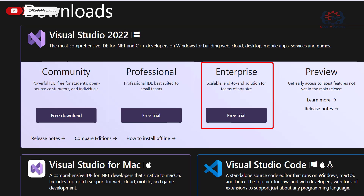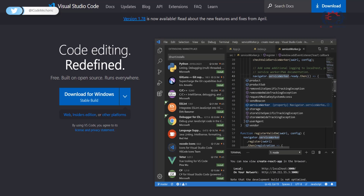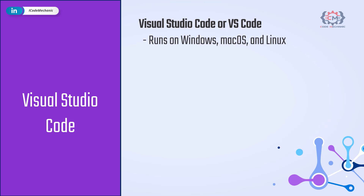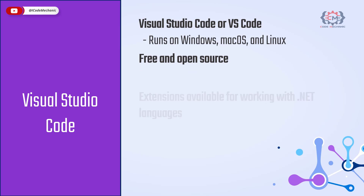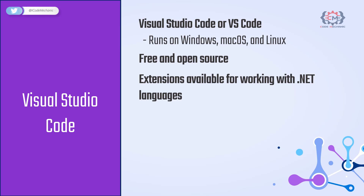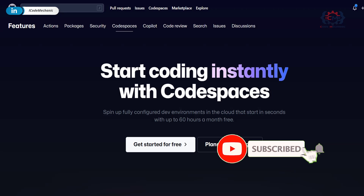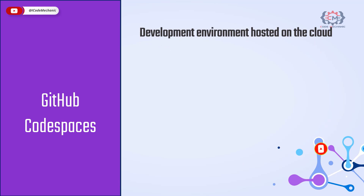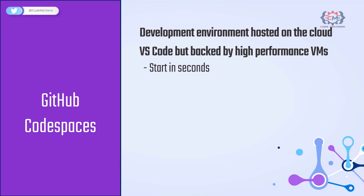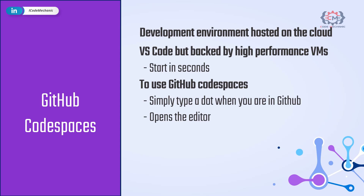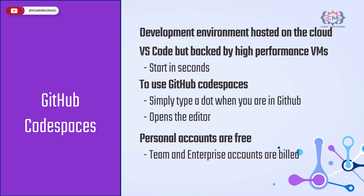Then there is Visual Studio Code — a member of the Visual Studio family, available for Windows, macOS and Linux, and it is open source and free. Extensions for working with .NET languages are available. One of the main advantages of VS Code is that it provides a consistent coding experience regardless of your operating system, and a web version is available at vscode.dev. Next is GitHub Codespaces — a development environment hosted in the cloud, essentially VS Code backed by high-performance VMs that start in seconds. You can open a GitHub code file by typing a dot, which opens the editor. Team and enterprise accounts are supported.